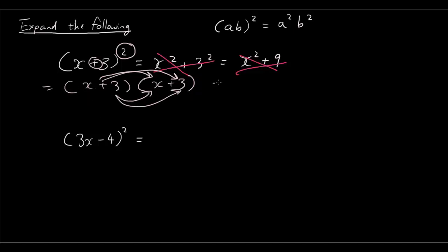So x times x is x squared, x times 3 is 3x, 3 times x is 3x, 3 times 3 is 9. So that gives you x squared plus 6x plus 9.